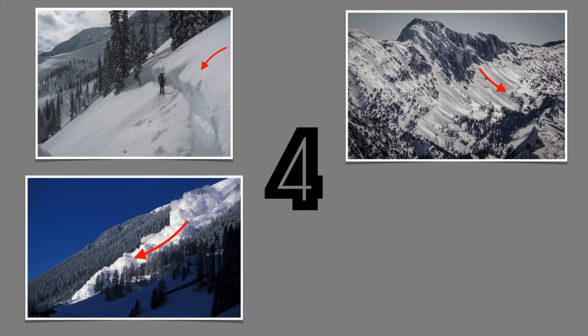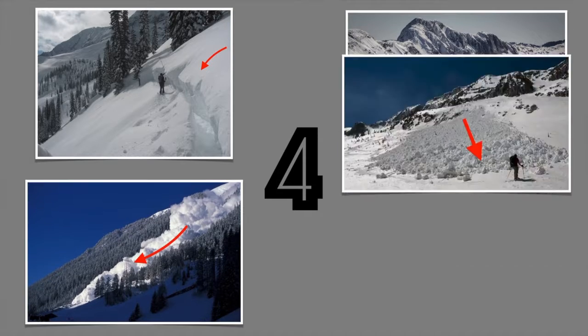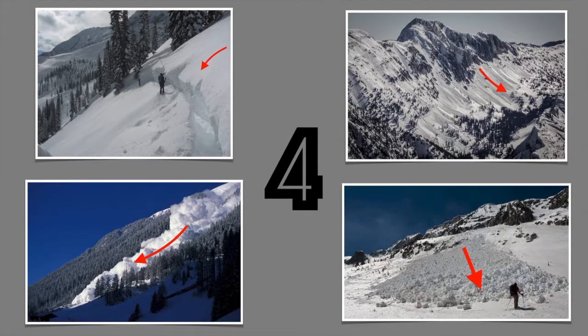Powder avalanches, that are created when snow and air mix to form a type of powder. Water and wet avalanches, caused when snow loses its strength by becoming damp with water.